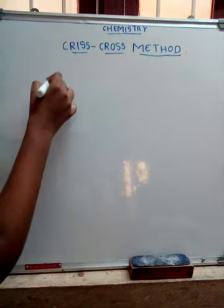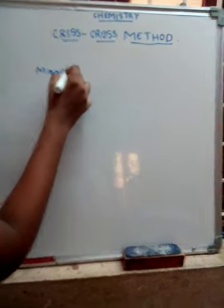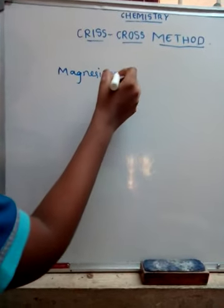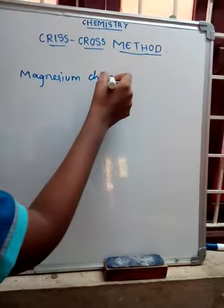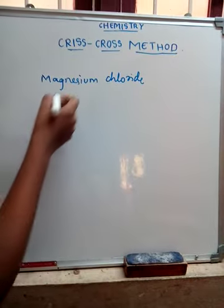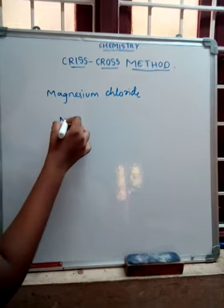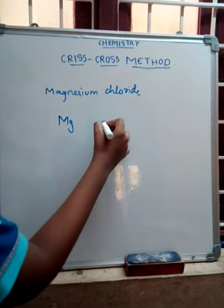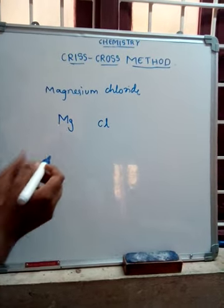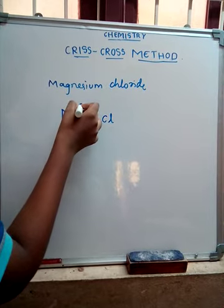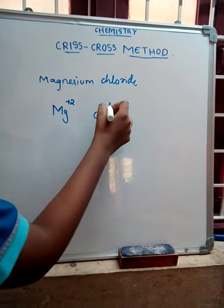Magnesium chloride. Symbol for magnesium is Mg, and chloride is Cl. Magnesium valence is plus 2. Chlorine valence is minus 1.